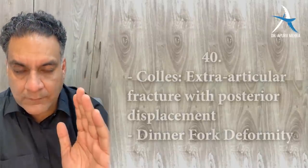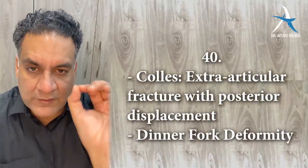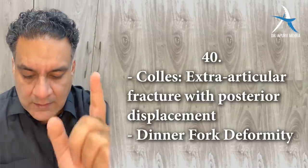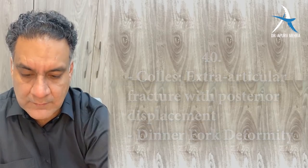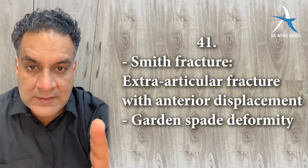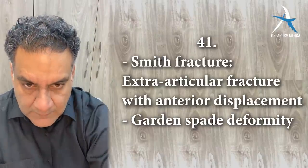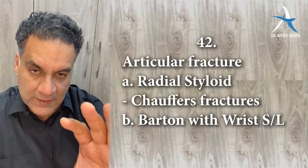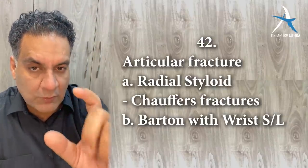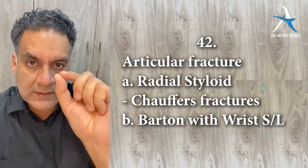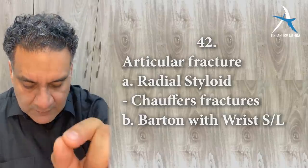Point number forty: Colles' fracture is an extra-articular fracture with posterior displacement causing a dinner fork deformity. Point number forty-one: Smith's fracture is again extra-articular but with volar displacement, causing a garden spade deformity. Point number forty-two: two articular fractures of the lower end of the radius — if it involves only the radial styloid, Chauffeur's fracture; if it involves the lower end radius with wrist subluxation, Barton fracture.